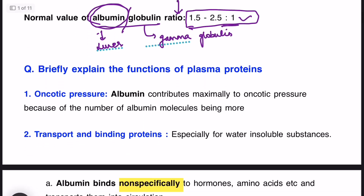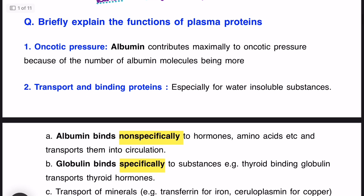Moving on to the next question: briefly explain the functions of plasma proteins. This can be a short answer question. We have seen the three major plasma proteins — albumin, globulin, and fibrinogen — and there are other proteins which also have functions. The first function is albumin's main function: to exert oncotic pressure.